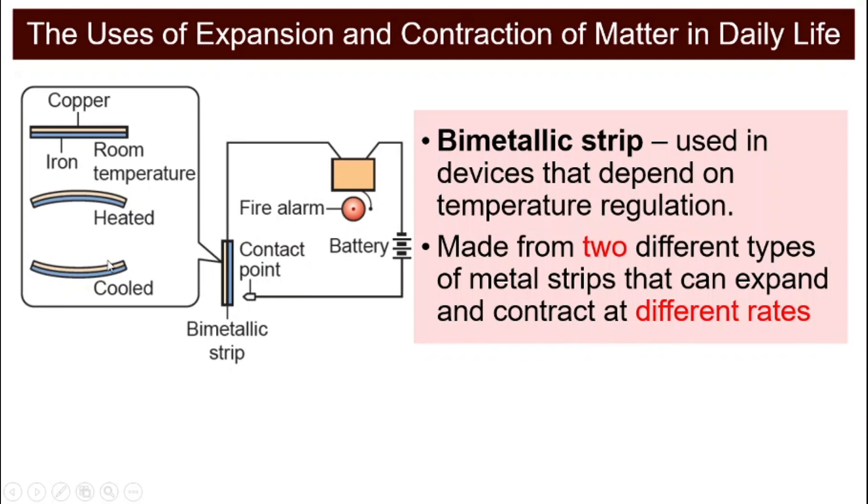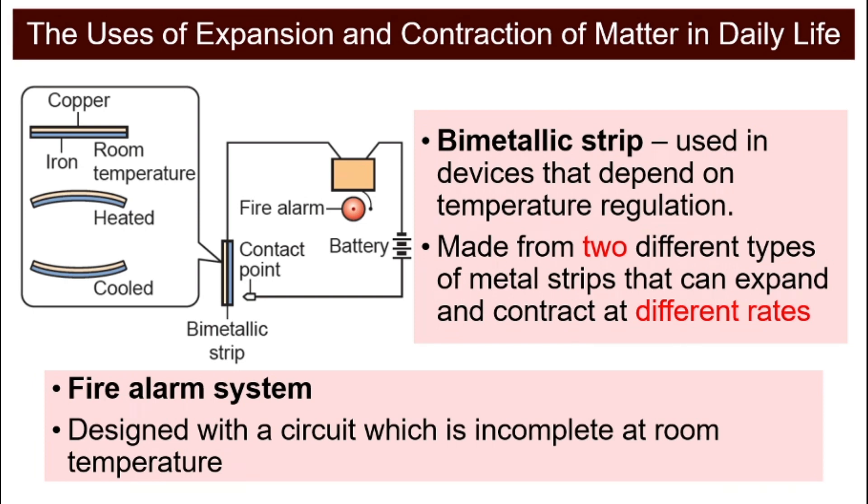When do we use this bimetallic strip? Normally in devices that depend on temperature regulation like the fire alarm system. Fire alarm system is designed with a circuit. This is an electric circuit that is incomplete at room temperature. This is room temperature when there's no fire. This electric circuit is not complete. The bimetallic strip is not touching the contact point. There's no electric current flowing, and so the fire alarm is not ringing.